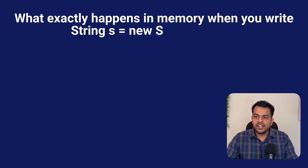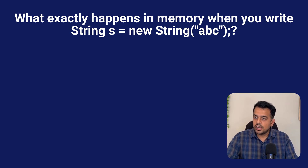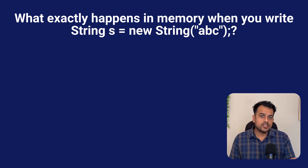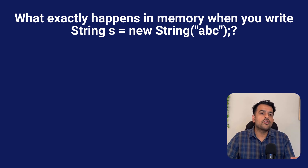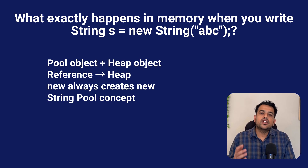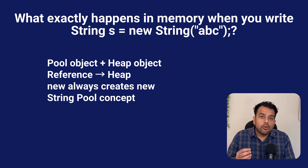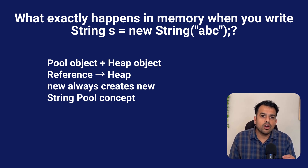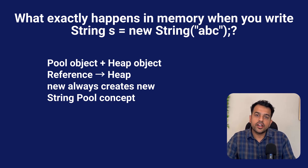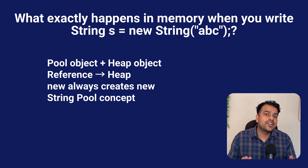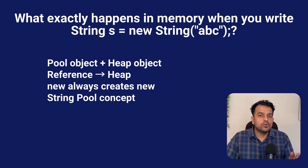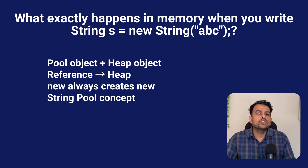Our very first question is: what exactly happens in memory when you write String s = new String("abc")? This line looks very simple but internally a lot is happening. First, the literal "abc" gets created in the string pool if it's not already there. Then because we wrote new String(), Java creates another object in the heap. So now you have two objects — one in the pool and one in the heap — and your reference points to the heap object, not the pool one. This shows that 'new' always creates a fresh object even if the same literal already exists. Interviewers ask this to check whether you understand string pooling, immutability, and memory structure. Most people say it creates a string but never talk about pool versus heap — your answer becomes strong when you mention both objects and the reason behind them.